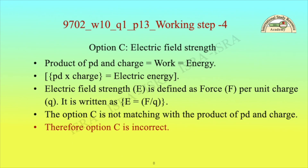Working step 4 — Option C, electric field strength: The product of PD and charge equals work, which equals energy. Electric field strength E is defined as force per unit charge Q, written as E = F/Q. Option C does not match the product of PD and charge, therefore option C is incorrect.